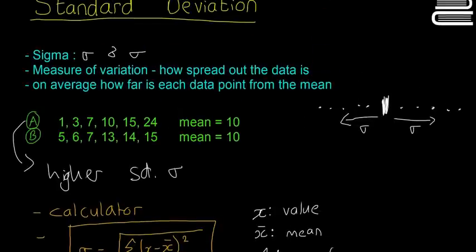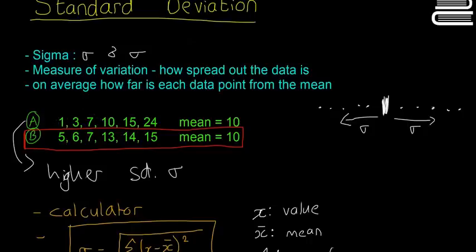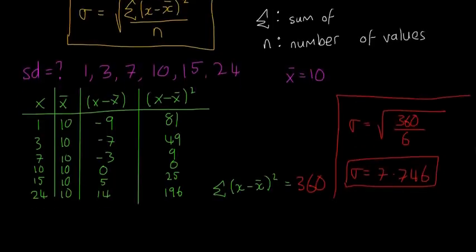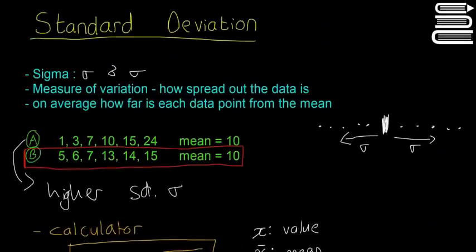So I'll let you guys try to find the standard deviation of B here, and you should find out that the standard deviation is going to be less than the standard deviation of A, because it's less spread out. So give it a shot. Use the same method I'd recommend, and then leave your answers down in the comments, and I'll tell you if they're right or not.